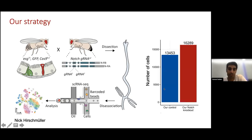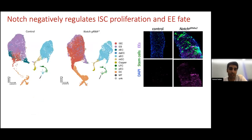We did these experiments in duplicates, and here I'm showing a summary of the cell numbers we recovered. This is after QC, and it currently comprises the most comprehensive single-cell dataset for the fly intestine at the moment. When we place these cells on a UMAP plot, we can see that we recover all of the cell populations in the intestine. And we can also see that in the notch-perturbed condition, there's a massive expansion of the stem cell population and also a massive expansion of the anterior endocrine cell population, which are shown here in red and orange.